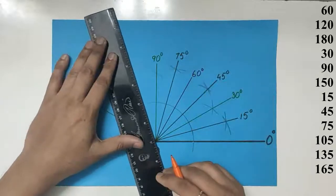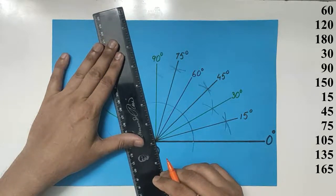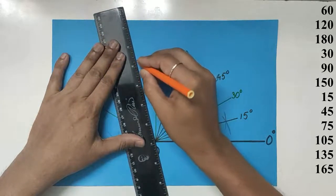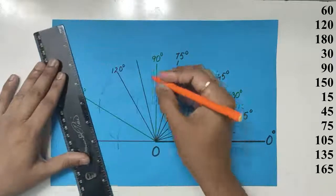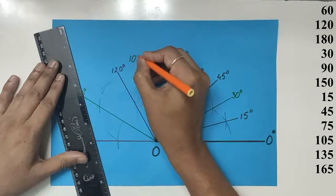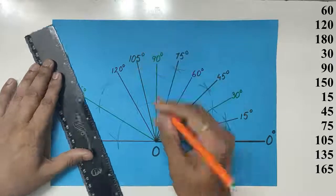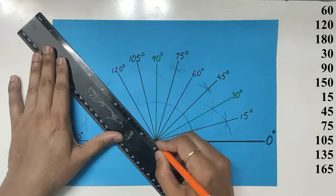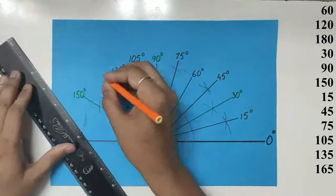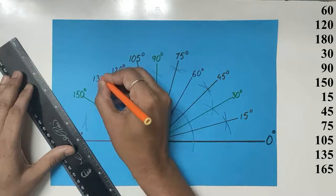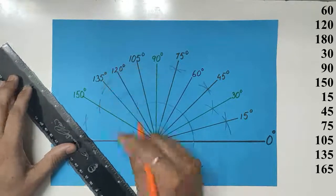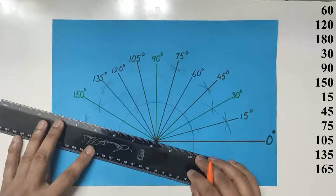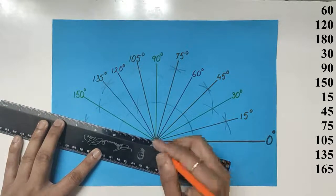Between 90 and 120, we get 105. Make sure the lines meet the points where the two arcs meet. Between 120 and 150, we get 135 degrees. And finally, 165 degrees.